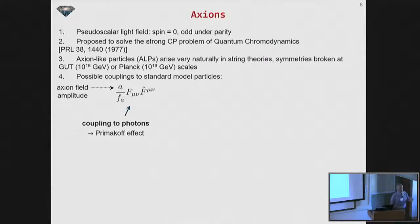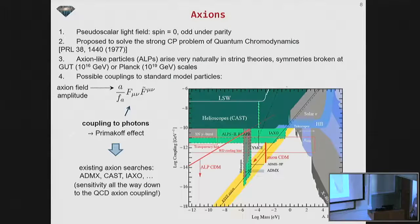And so there are three possible, the symmetry basically dictates that there are three possible couplings to standard model particles. And the first one is this coupling to photons, which is the Primakoff effect. So here A is this Axion field amplitude that Andrei talks about, and f mu nu is just the electromagnetic field. And this coupling is basically the basis, has been the basis for most of the searches for Axions to date, such as ADMX, cast, and so on.